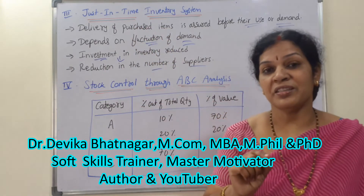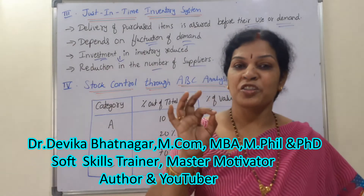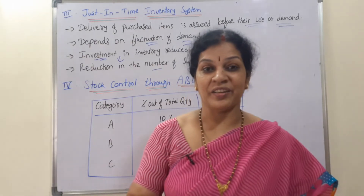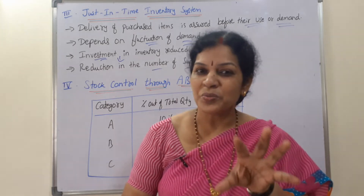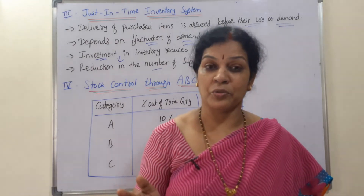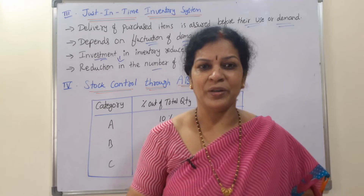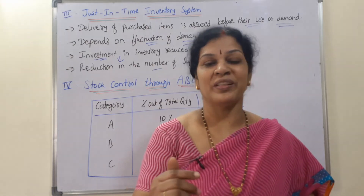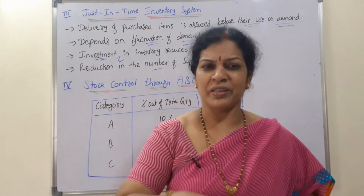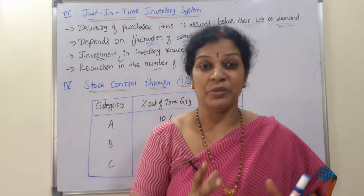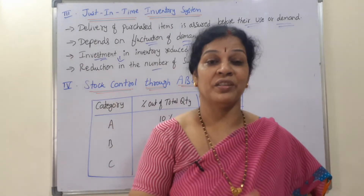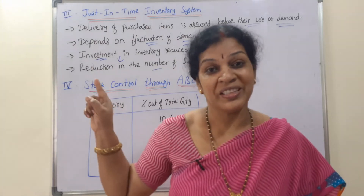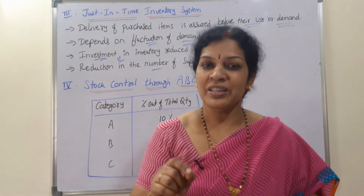The Just-In-Time system is especially useful for small organizations that don't want to spend heavily on material investment and storage. However, large organizations also use it. It works well only when the supplier system is functioning smoothly. If there is a delay, or the supplier cannot supply goods, or there is miscommunication, then this system fails — causing delays or even a stoppage of the manufacturing process.